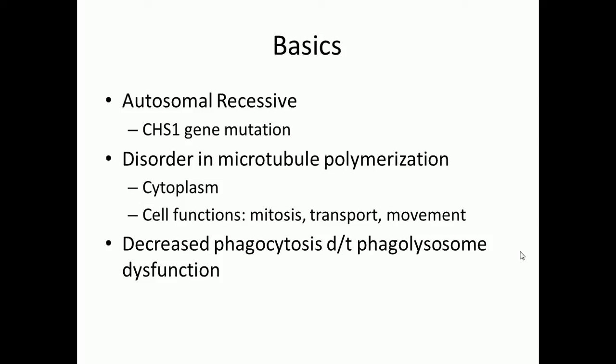The main problem is decreased phagocytosis. The phagocytes within your body — like macrophages and neutrophils — take up foreign cellular materials such as bacteria. What normally happens is the cell eats that bacteria, merges it with a phagolysosome, and that ultimately degrades the bacteria. However, since we have a disorder in microtubule polymerization, phagocytosis cannot occur properly.